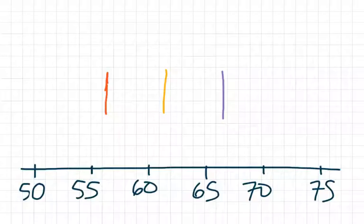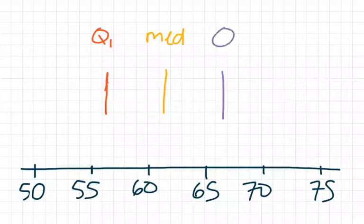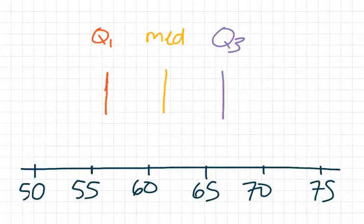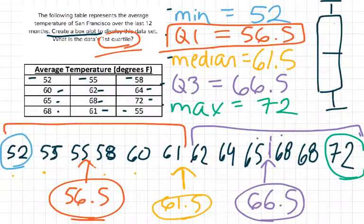And this is our box made up of Q1, the median, and Q3. In order to make the box, we just connect. And that's the box part of our box plot now for the whiskers.